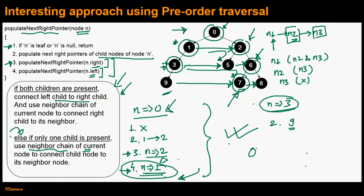The time complexity of this algorithm is O(n), because this is essentially a pre-order traversal. The space complexity is also O(n). You can check out the web post which has the complete implementation of this algorithm on our website www.ideserve.co.in. If you have any queries or feedback, please leave us a comment below. Thank you and cheers.